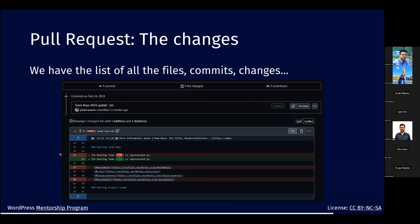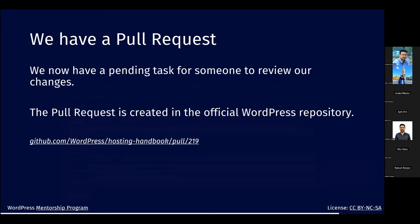The pull request shows the diff — changes shown in red for deletions and green for additions. In this case I modified a line (technically deleted the old one and added the updated one), changed '2023' to '2024', and removed two people who are no longer team reps. The pull request is now pending approval in the official wordpress/hosting-handbook repository.